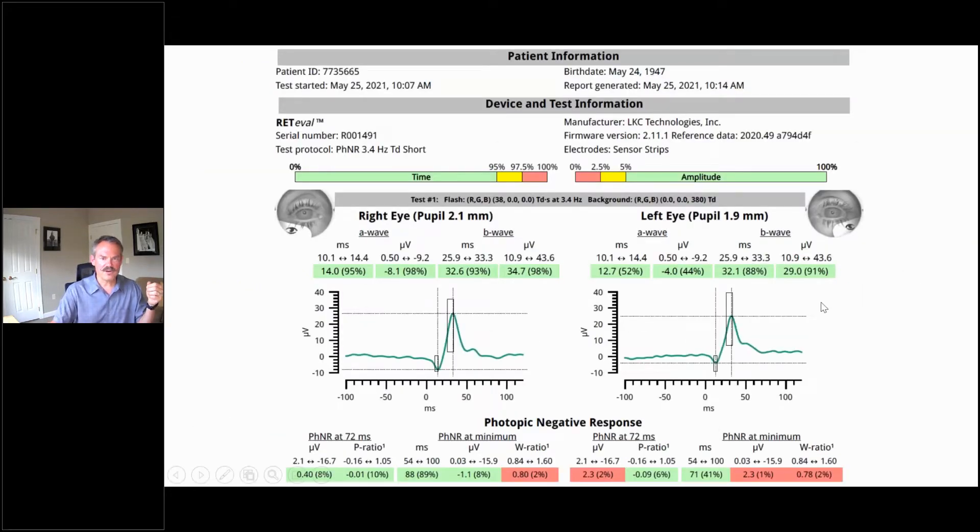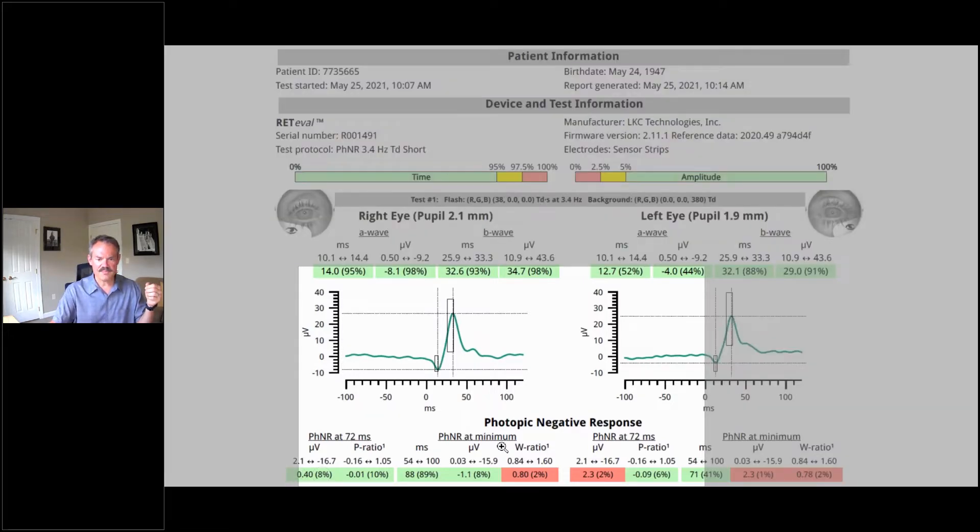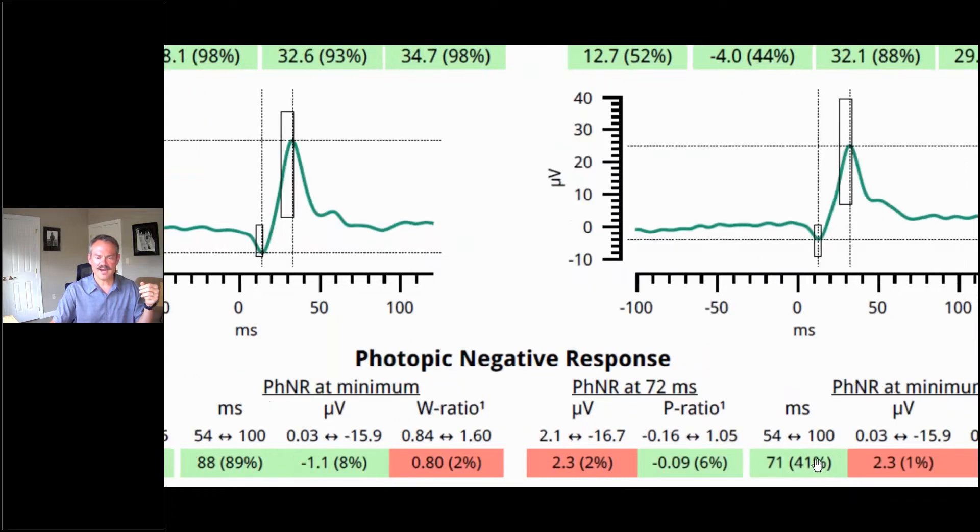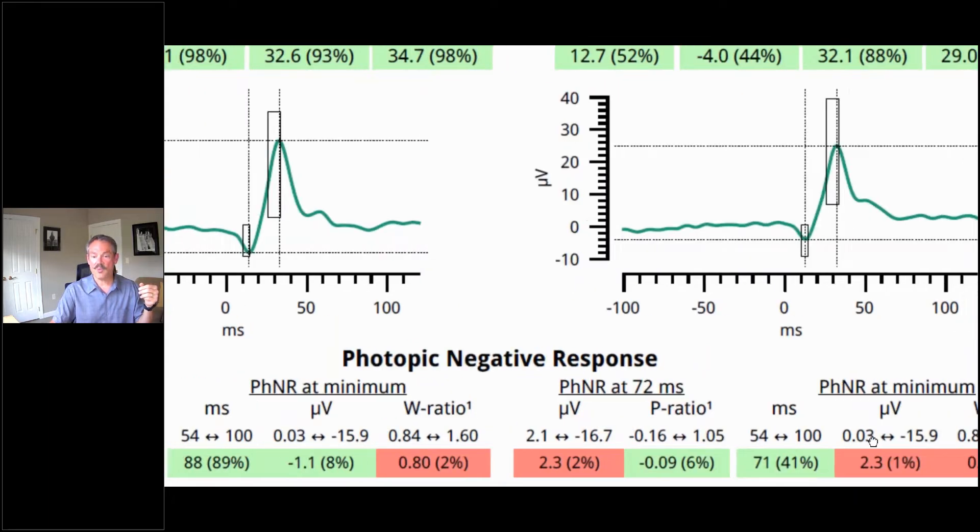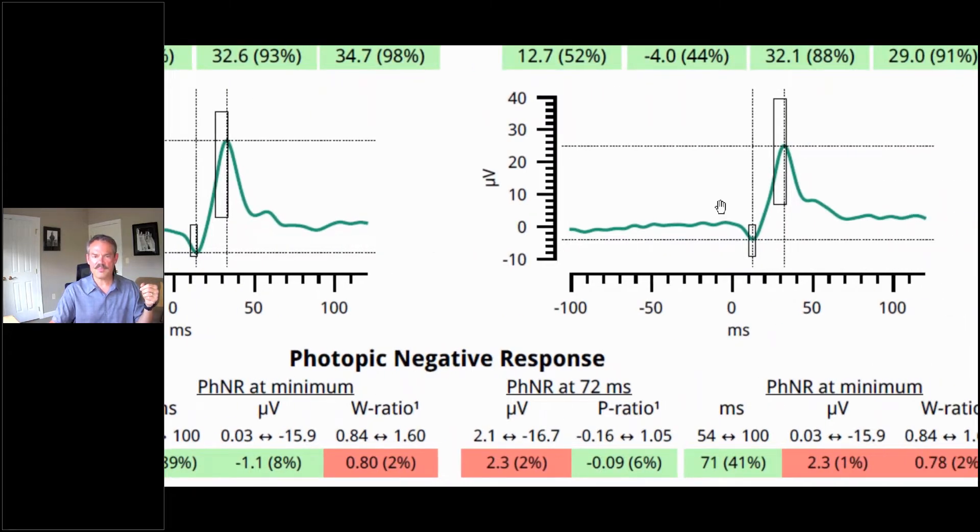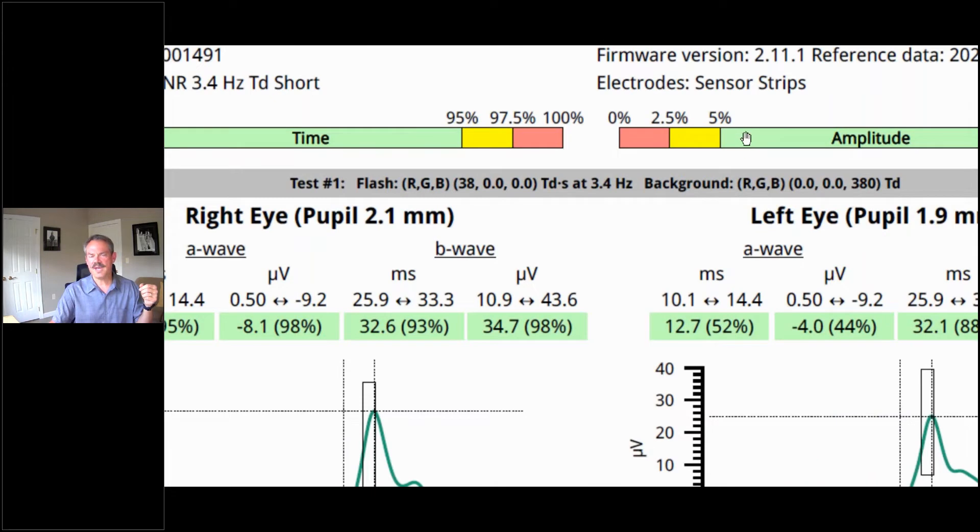When we do the ERG, the ERG confirms that by looking at the PHNR at minimum in the right eye is saying we're at 8% on the amplitude in the right eye and 1% amplitude in the left eye. So PHNR minimum, 8% in the right eye, 1% in the left eye.